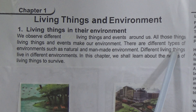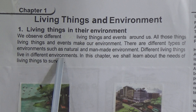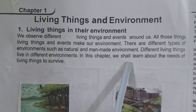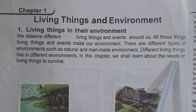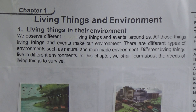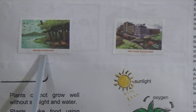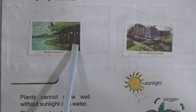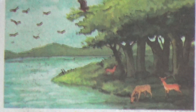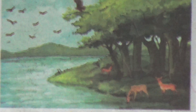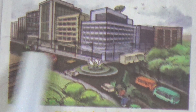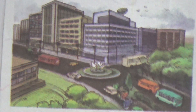Different living things live in different environments. In this chapter, we shall learn about the needs of living things to survive. Here is a picture of a natural environment — you can see a forest with animals, birds, trees, and a river. And here is a man-made environment, where roads and farms are examples.